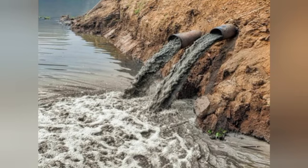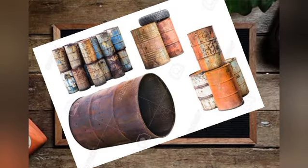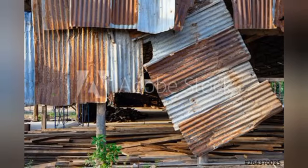Next we are going to see about rusting. What happens to steel benches and gates during the rainy season? They turn a reddish-brown colour — do you notice that, students? This is because of rusting. When iron metal comes into contact with water and oxygen, it undergoes a chemical reaction called rusting.